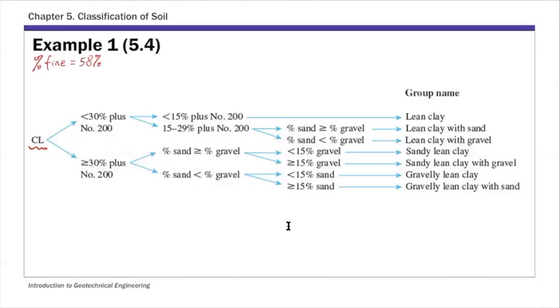And then for this soil, let's look at the percentage of fine. Remember, so percentage of fine is 58%. Percent of coarse is 42%. And if you look at these two conditions here, as I mentioned, plus number 200, meaning it's retained above number 200.